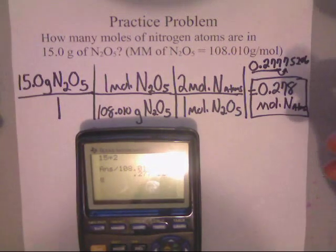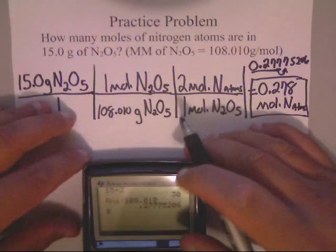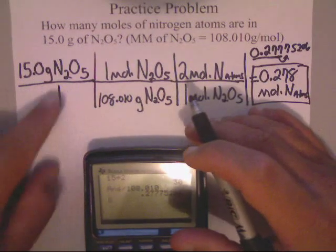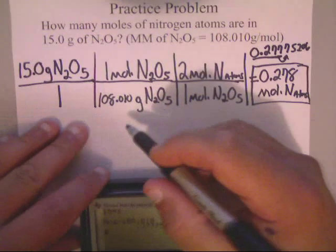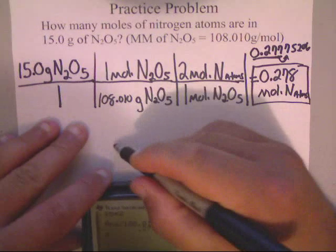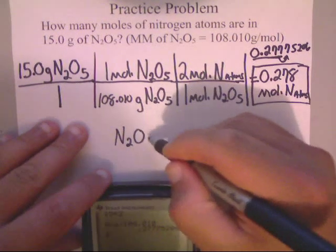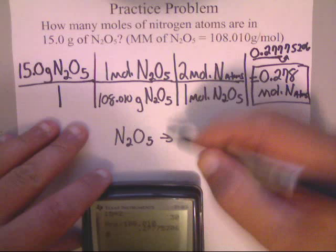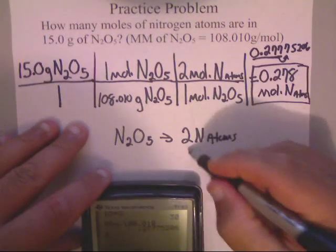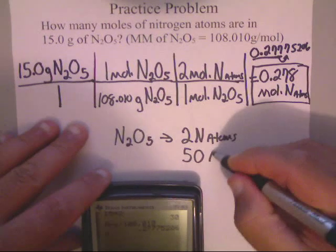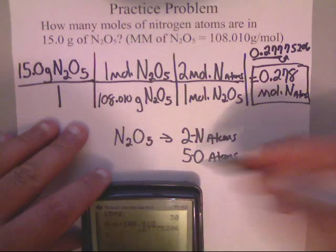So my answer is 0.278 moles of nitrogen atoms. And that's how you do that calculation. Now this is actually kind of nice that they gave us the molar mass because that saved us a lot of time. But just remember that if you're trying to figure out how many there are as far as individual atoms, you look at the subscripts and they'll tell you. A quick example.